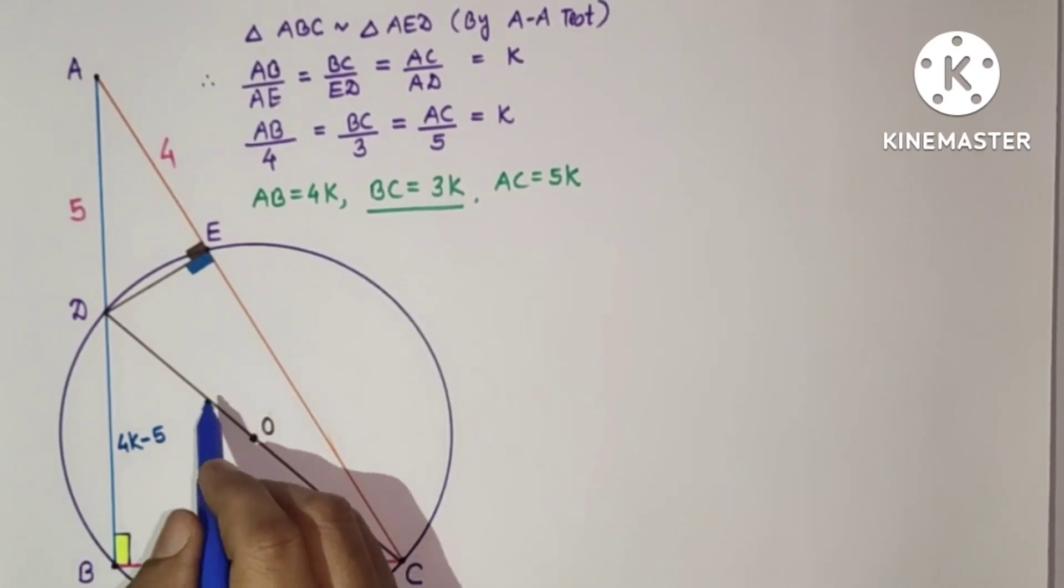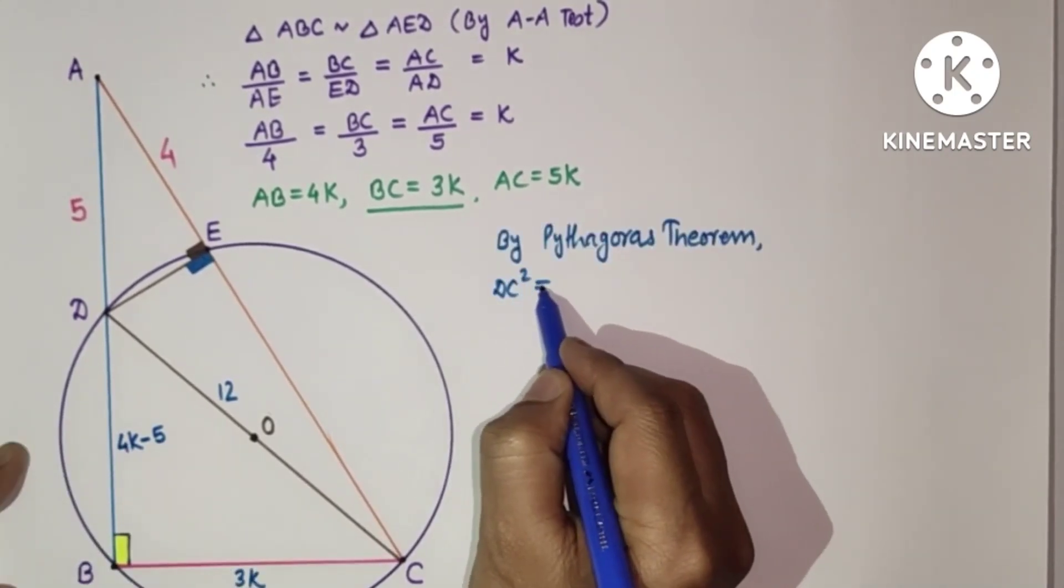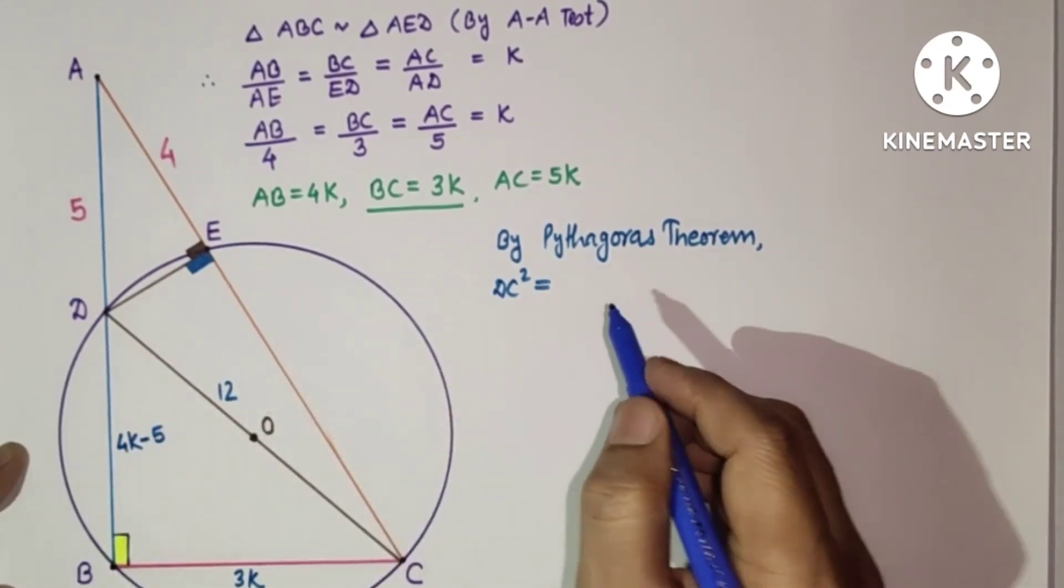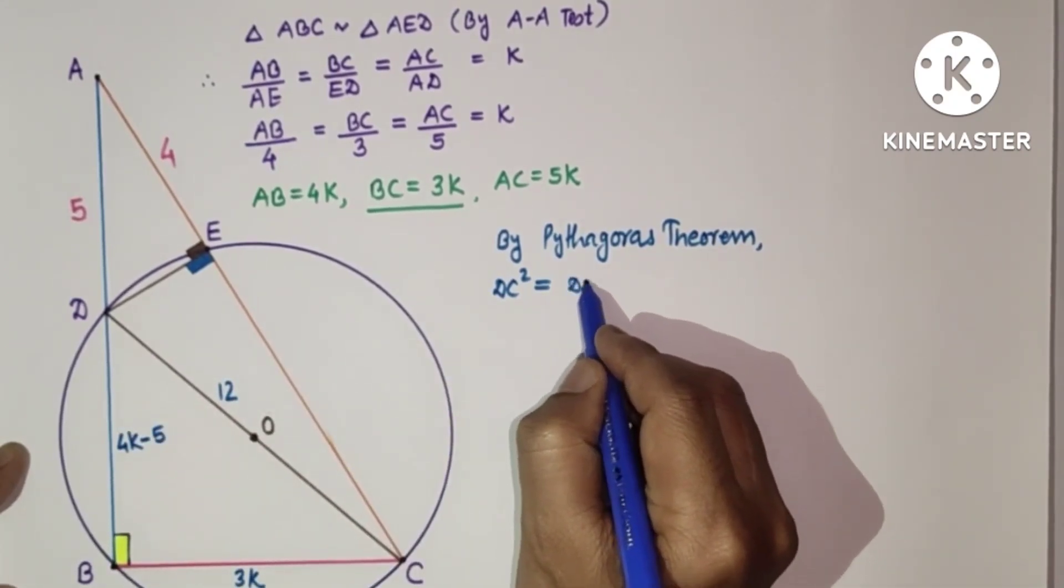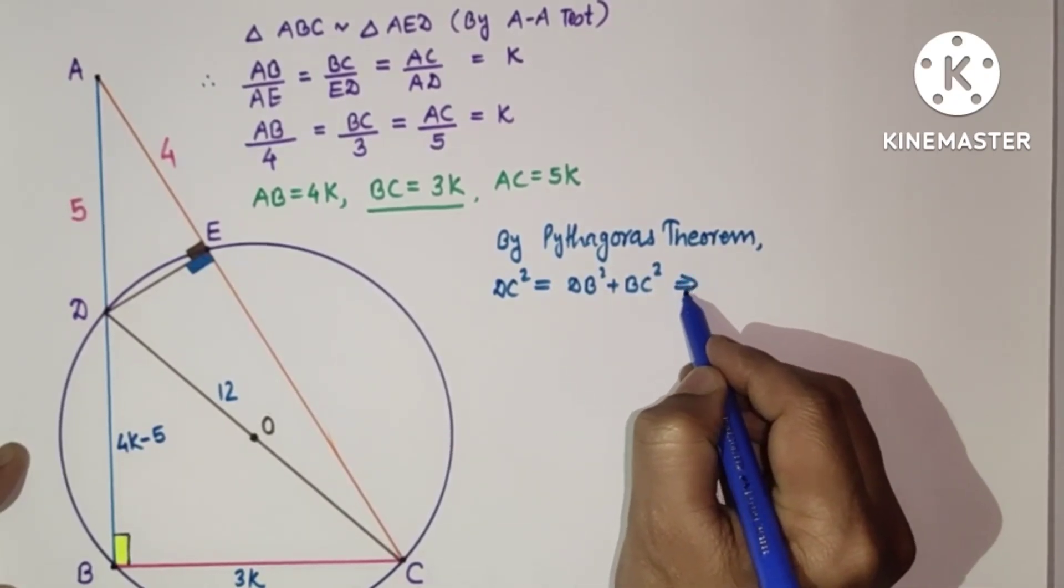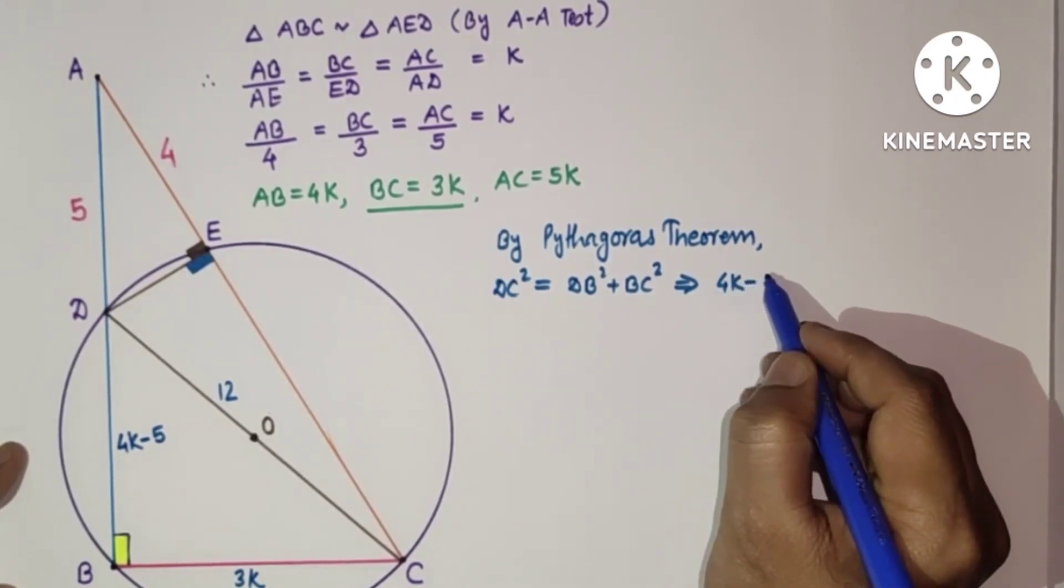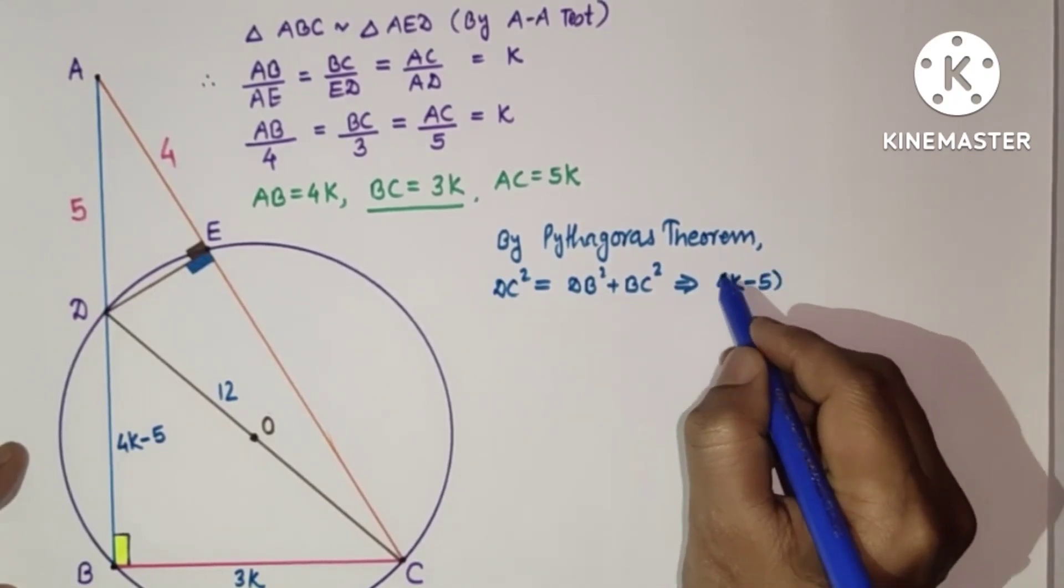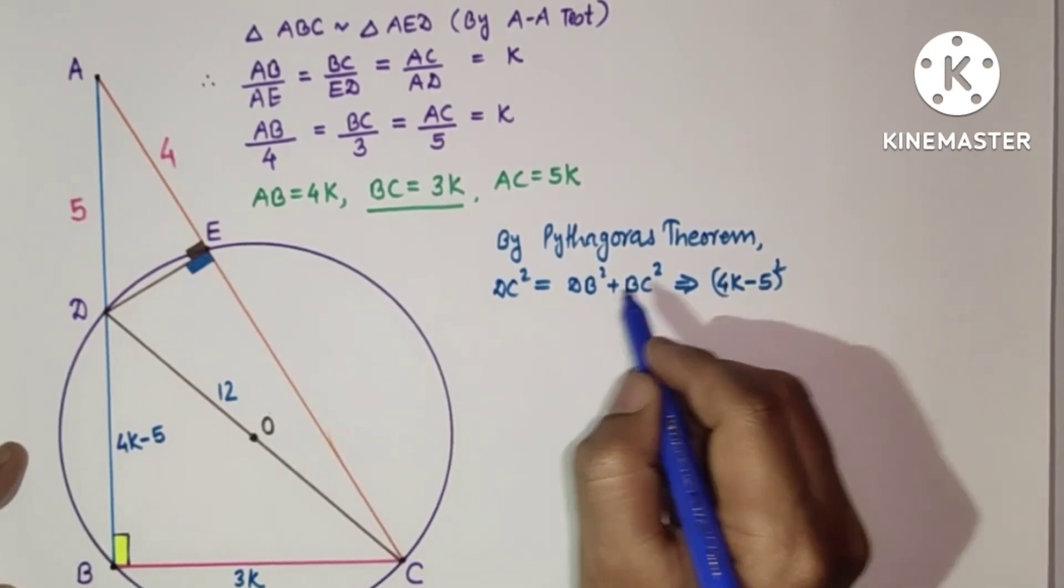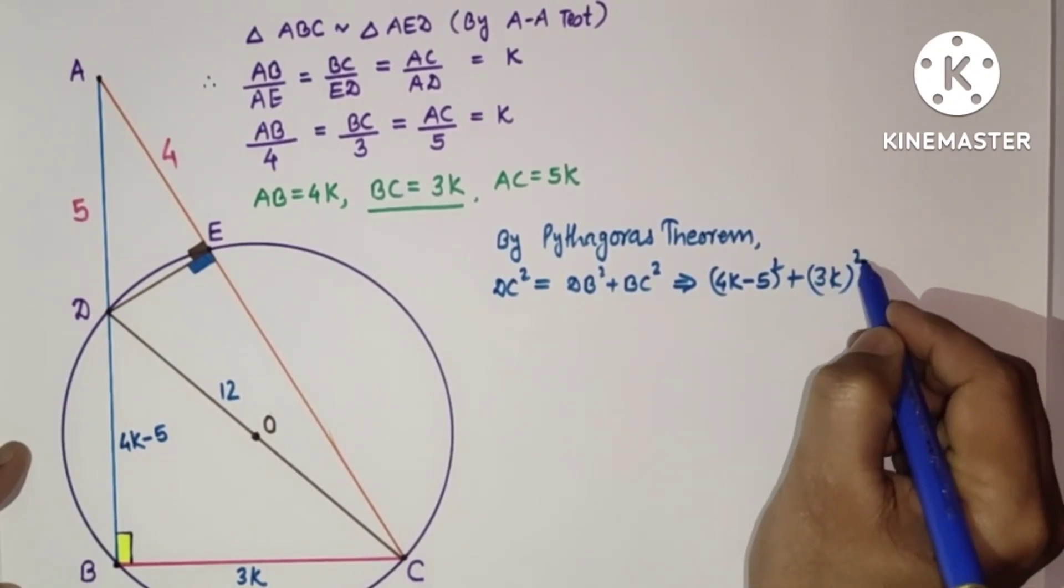And BC we found as 3K. So using Pythagoras theorem, DC square equals DB square plus BC square, which equals 4K minus 5 the whole square plus 3K the whole square.